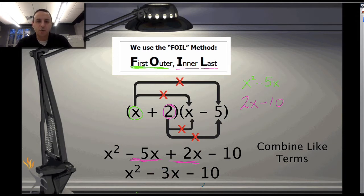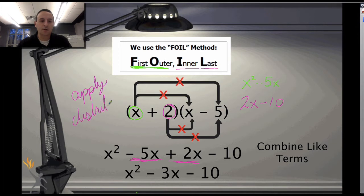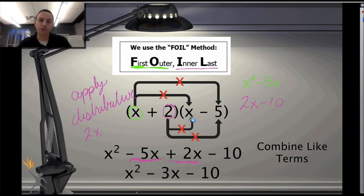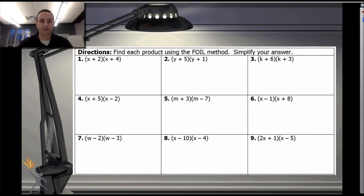That's really all we're doing — applying the distributive property twice: once to the first number distributed to both terms, and once with the second number to both terms. We're sharing everything equally and evenly. So let's take a look and try some practice.